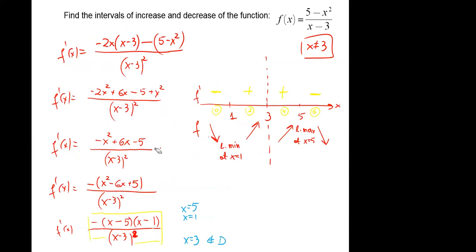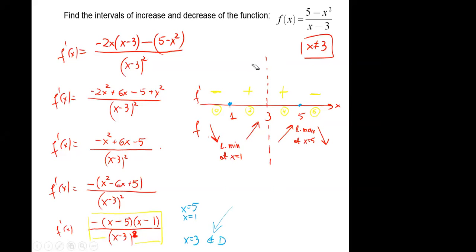For intervals of increase and decrease: use the quotient rule, find critical points — in this case five, one, and three. Note that three is not in the domain but we still place it on the number line as a crucial point. Test sign in each interval: negative means decreasing, positive means increasing. Use this to identify local minimum and local maximum.